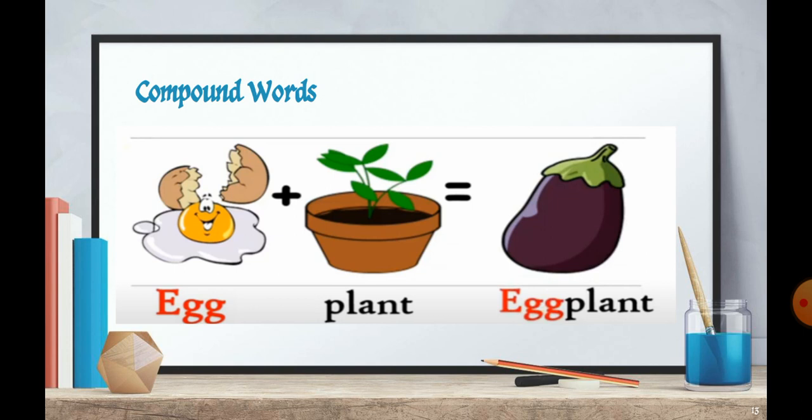Next one is egg. Egg and there is one plant. When we join these two words, egg and plant, we will get the name of a vegetable. That is eggplant.